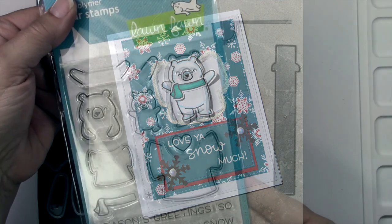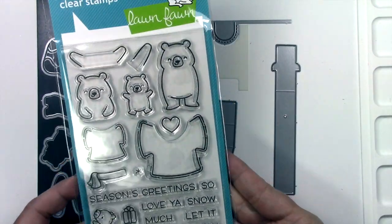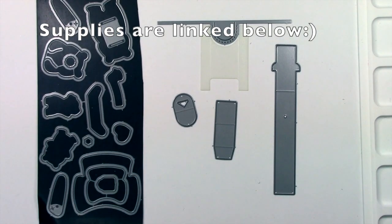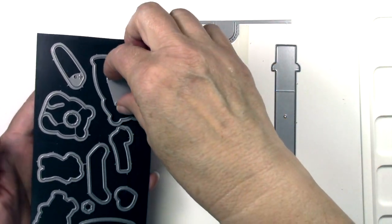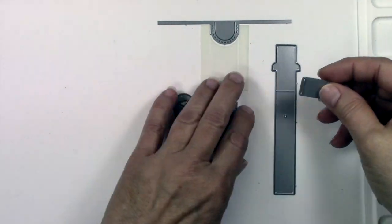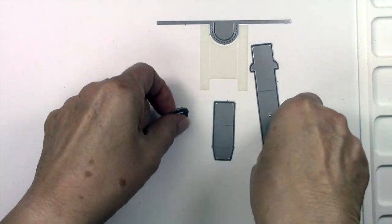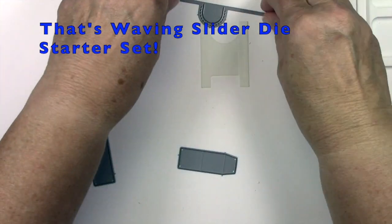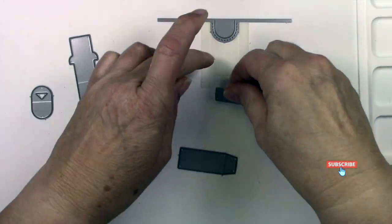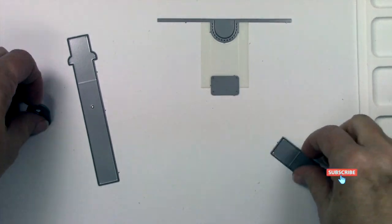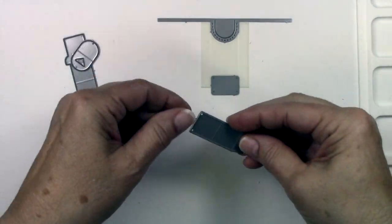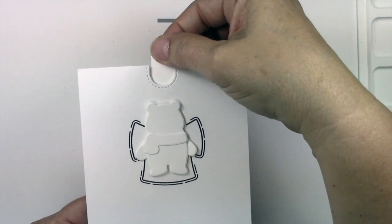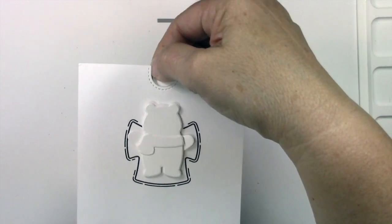This is the Snow Much Fun Stamp and Die Set from Lawn Fawn's latest release. There's a piece out of the die set that also goes with this sliding, waving slider card. I'm just showing you how the mechanism gets put together just real quick with these little pieces, and they're going to make other sets that will go with this. See how the little bear waves? So cute.